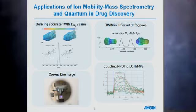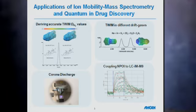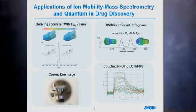So what I'm going to talk about is deriving accurate nitrogen collision cross-sections on the travelling wave instrument. Then I'll talk briefly about analysing small molecules in different gases ranging in different polarisabilities. Then I'm going to talk about some corona discharge and how we apply that to intact proteins and native protein complexes, and then coupling nanopore optical interferometry to mass spectrometry and ion mobility. All of these subjects have either been published or are just about to be published, and they are all being used in Amgen today.